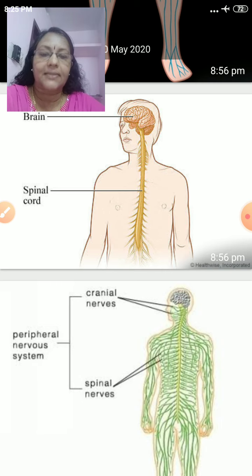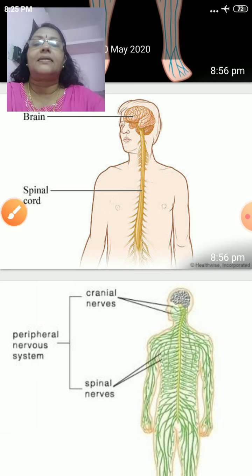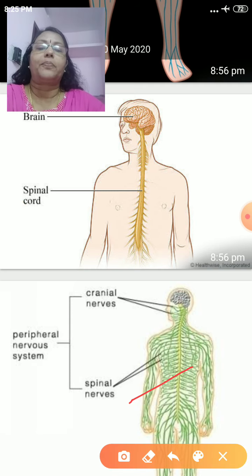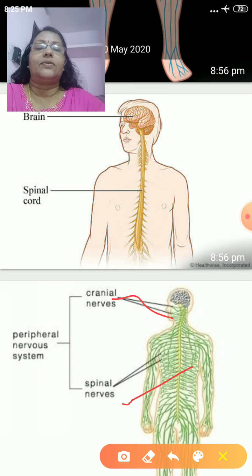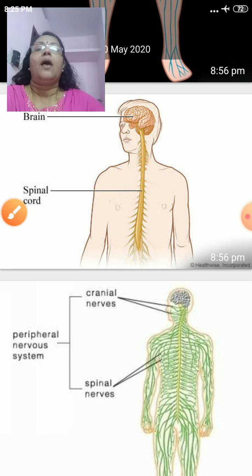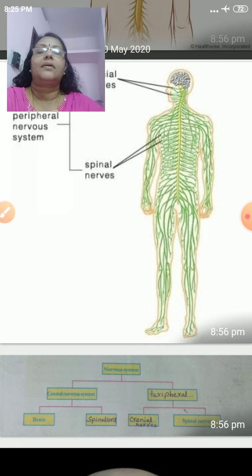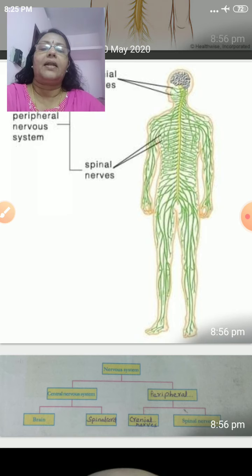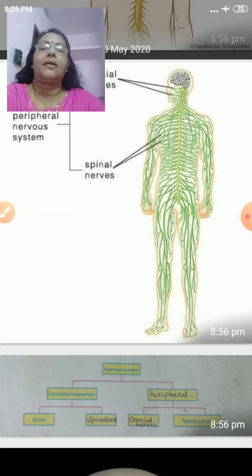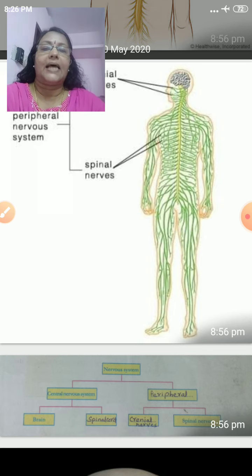Cranial nerves arise from the brain. Spinal nerves arise from the spinal cord. These are the spinal nerves and these are the cranial nerves. This is the flow chart showing the nervous system — classified into central and peripheral. Central nervous system is classified into brain and spinal cord; peripheral nervous system into cranial nerves and spinal nerves.